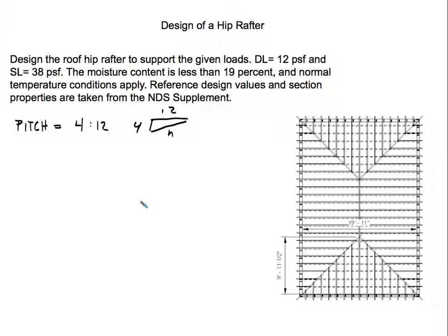Hello everyone, welcome to part two of the analyze and design hip rafter series. In part one I talked about the behavior of a hip roof and the steps to analyze and design a hip rafter. For this video we're going to work through a problem: design the roof hip rafter to support dead load of 12 pounds per square foot and snow load of 38 pounds per square foot. Moisture content is less than 19%, normal temperature conditions apply, and the hip roof has a 4-to-12 pitch.